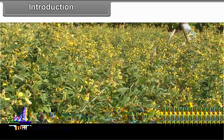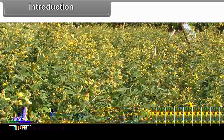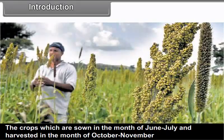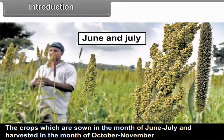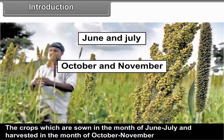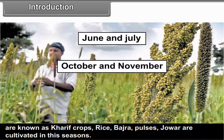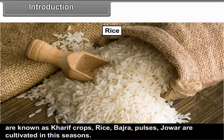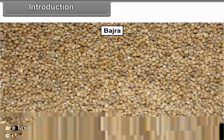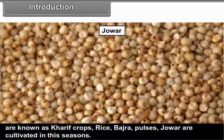1. Kharif Season: The crops which are sown in the month of June and July and harvested in the month of October or November are known as Kharif crops. Rice, Bajra, Pulses, and Jowar are cultivated in this season.